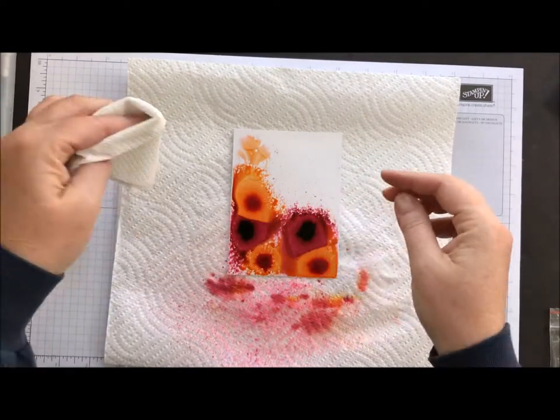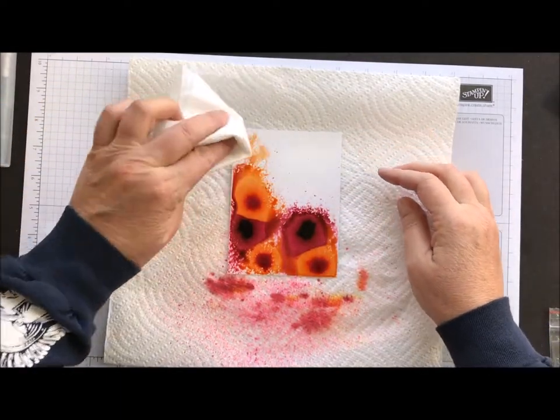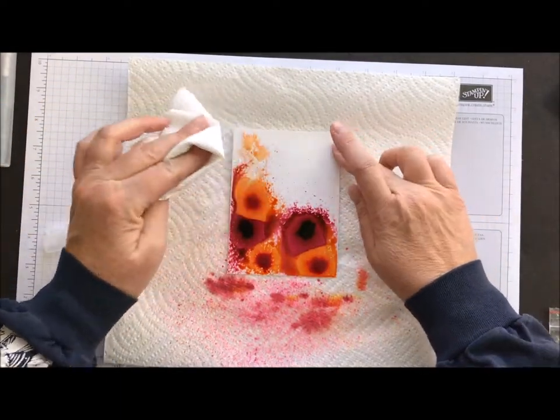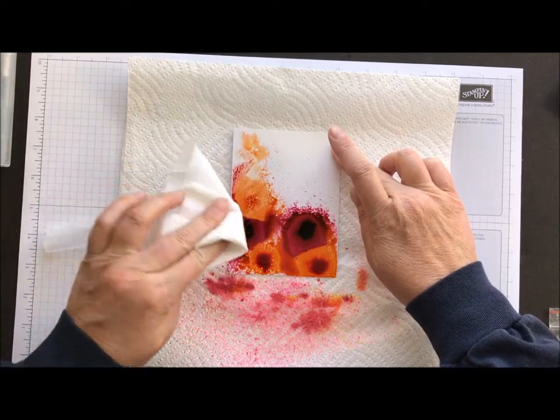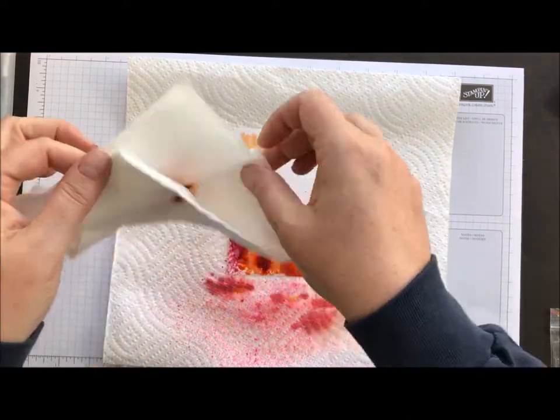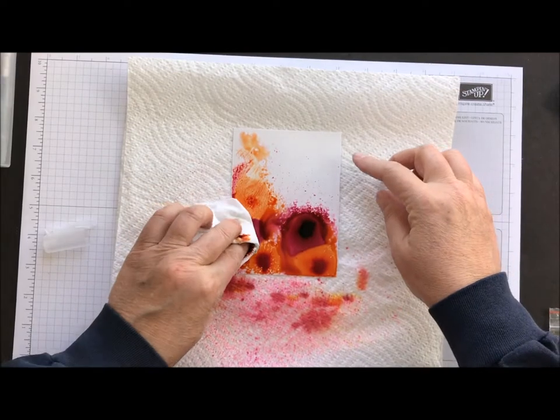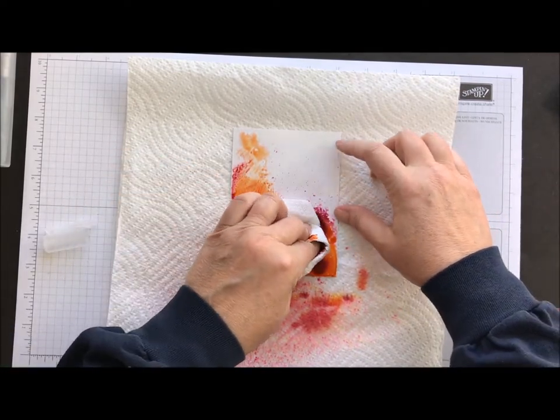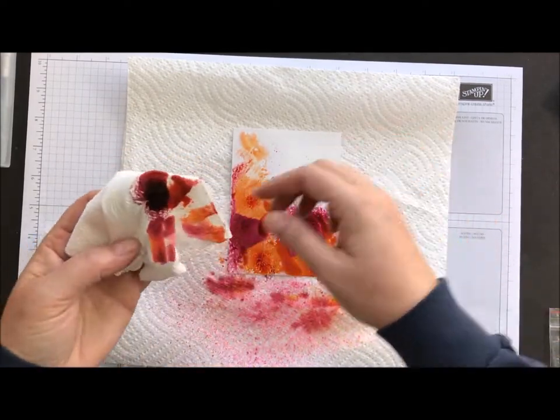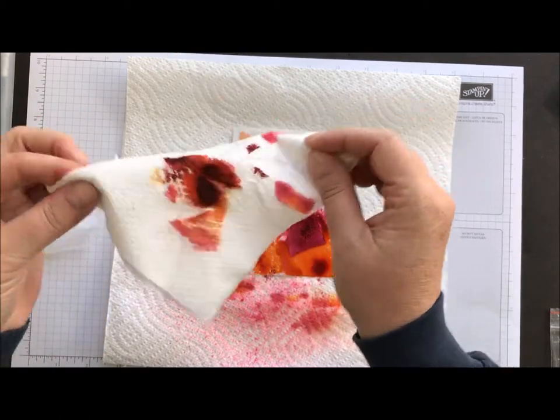Then you're going to take a napkin, paper towel, whatever you have. Just start blotting off the excess ink spots that you have. And I like to turn it, kind of keep pulling off and not trying to bleed the colors too much. Just some dabbing.